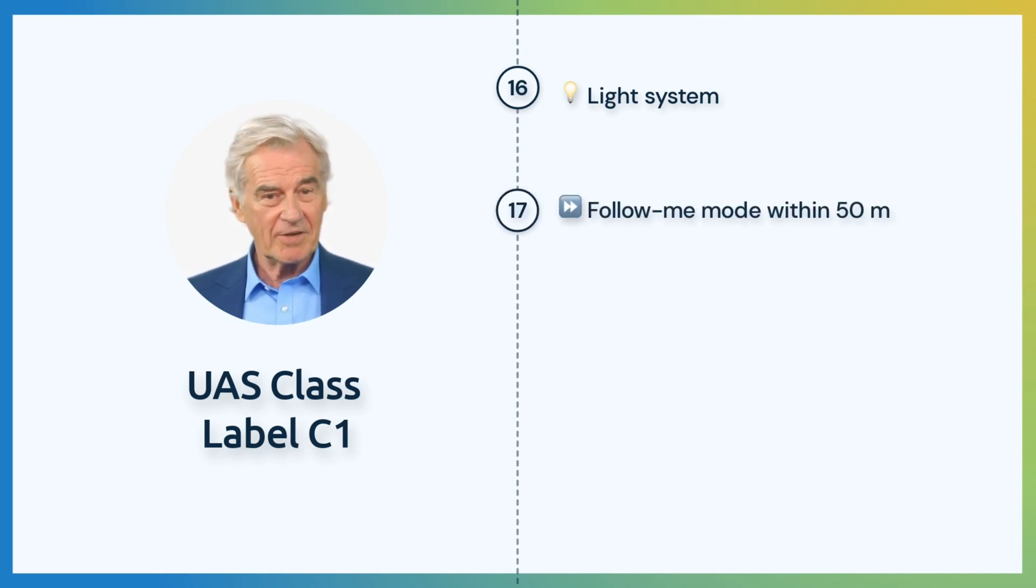A follow-me mode is optional, but if equipped with this mode, the UA can have a range of 50 meters from the pilot. The pilot must be able to regain manual control of the UA.